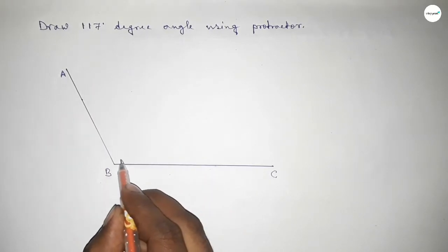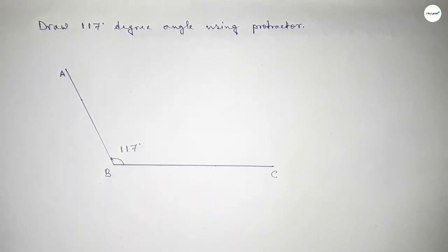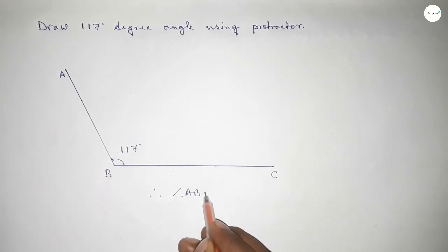So angle ABC up to this is 117 degrees. Therefore, angle ABC equals 117 degrees. That's all.